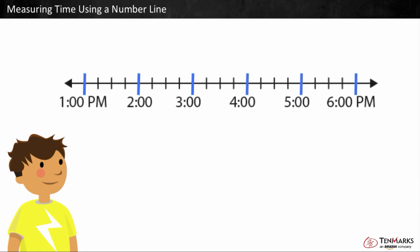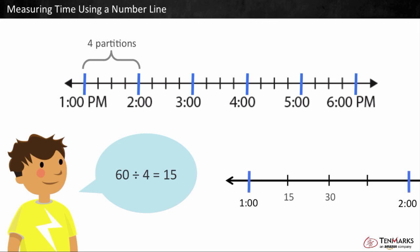Sometimes a number line can be broken into increments other than 5s. Remember that the whole for an hour is 60 minutes. Divide it by the number of equal pieces or partitions to find how many minutes each tick mark represents. This number line has 4 partitions between each hour. 60 divided by 4 is equal to 15. So, each tick mark represents 15 minutes.